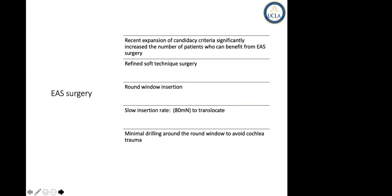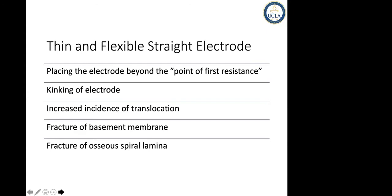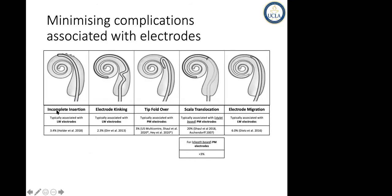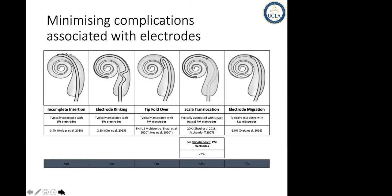Generally speaking, these are the known complications related to cochlear implants for a variety of reasons: incomplete insertion, kinking of the electrode, tip fold over, scalar translocation, and migration of the electrode. Clearly, it has a lot to do with the experience and ability of the surgeons to minimize these complications, but with adequate training you can really minimize them.